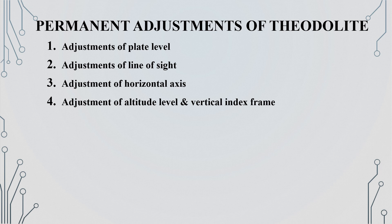The next step is the permanent adjustment. We can do permanent adjustments in the plane. We can adjust the level plates and the line of sight. The horizontal angles and the altitude level have to be set. If we adjust the vertical index frame, we complete the permanent adjustment.